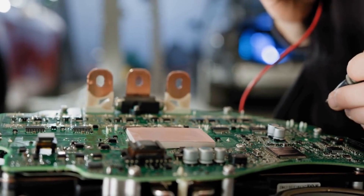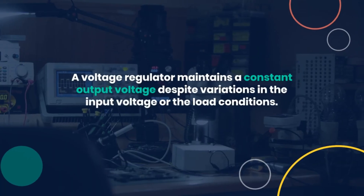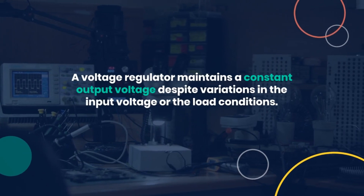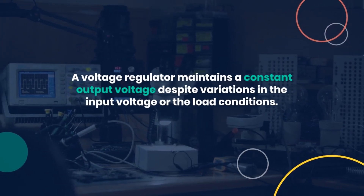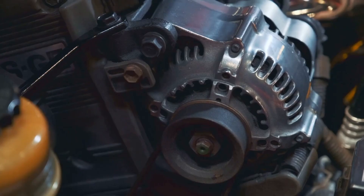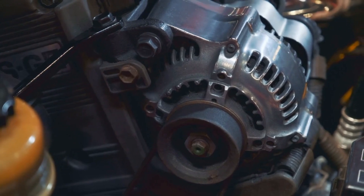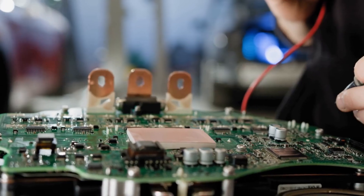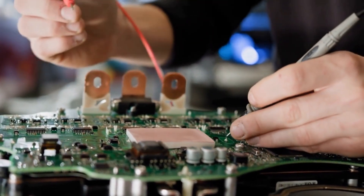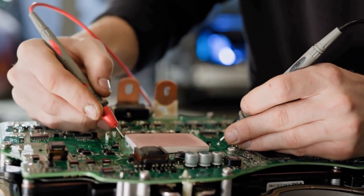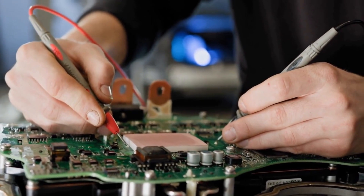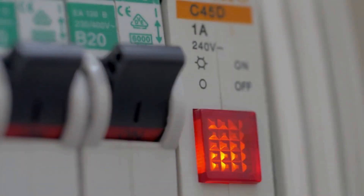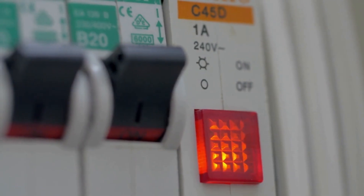Question twenty-three: Explain the purpose of a voltage regulator. A voltage regulator maintains a constant output voltage despite variations in the input voltage or load conditions. It ensures the stable operation of electrical devices and is essential for protecting sensitive electronic equipment from voltage fluctuations.